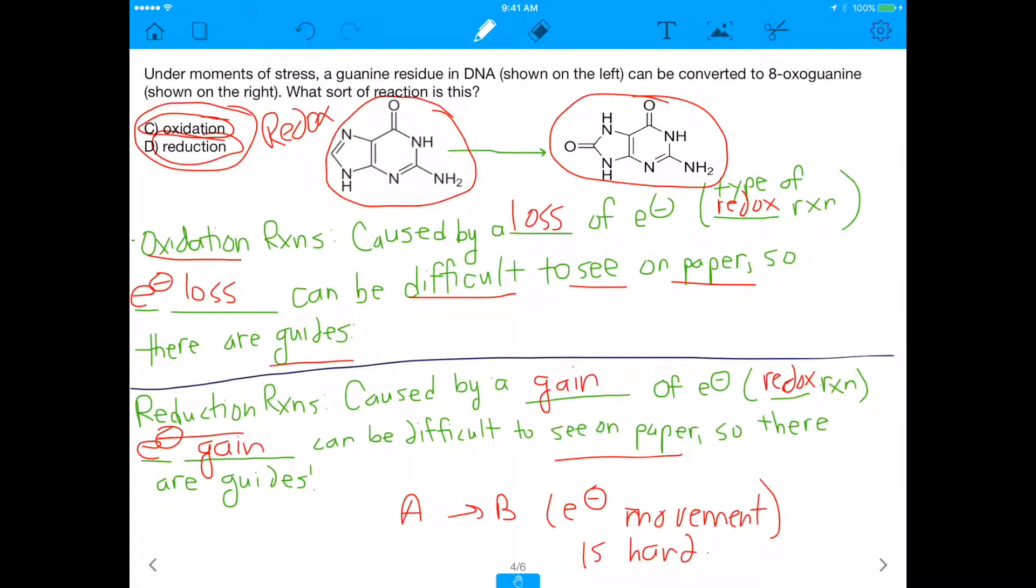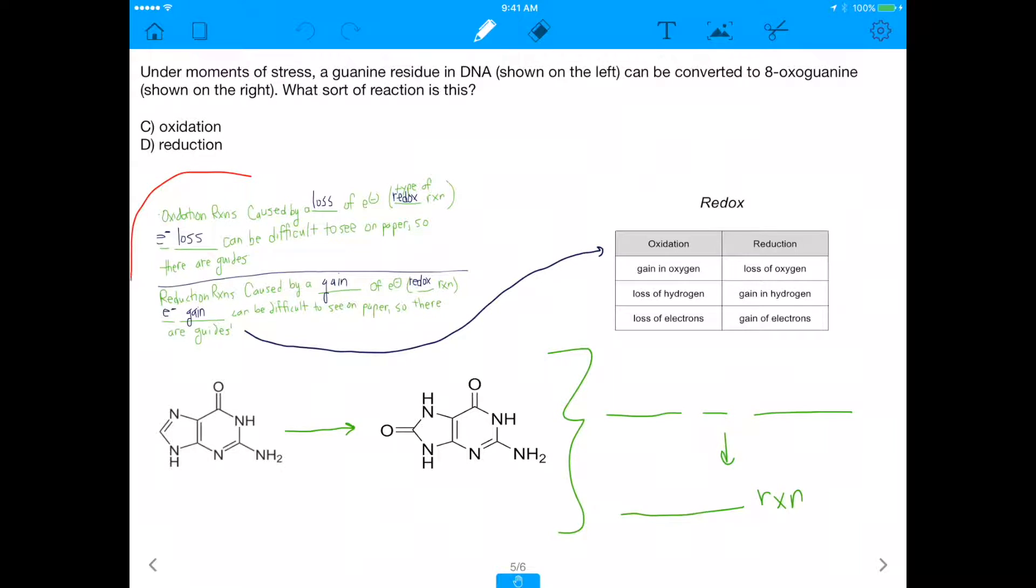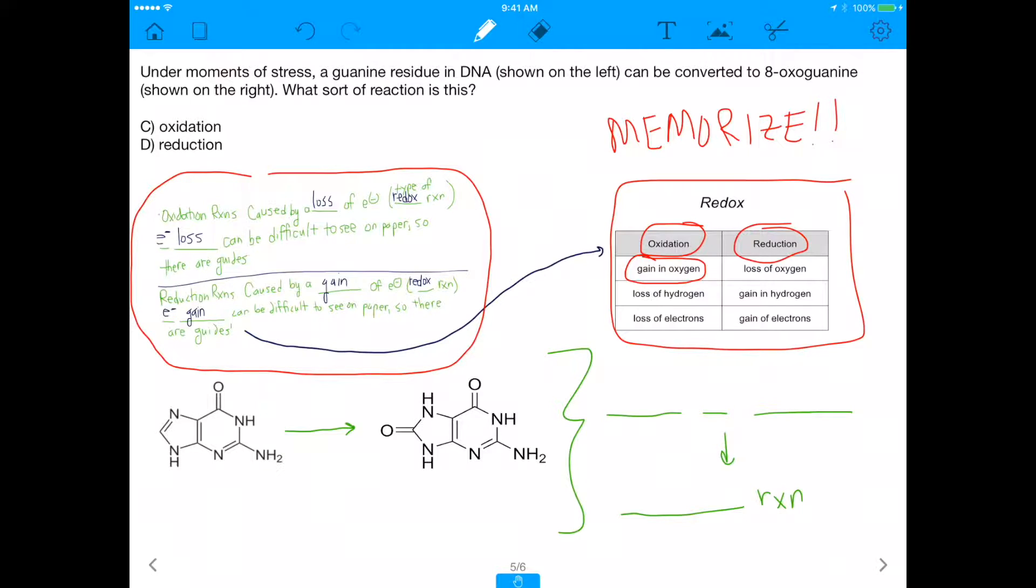This chart is what you should memorize. You should memorize it because it's something that absolutely you will need to know. An oxidation reaction, if you involve a gain in oxygen, that means you've gone through an oxidation reaction. Or if you lose a hydrogen, that's another way to signify an oxidation reaction. And if you lose electrons, that's another way. Similarly, reduction reactions are indicated by a loss of oxygen, or a gain in hydrogen, or a gain of electrons.